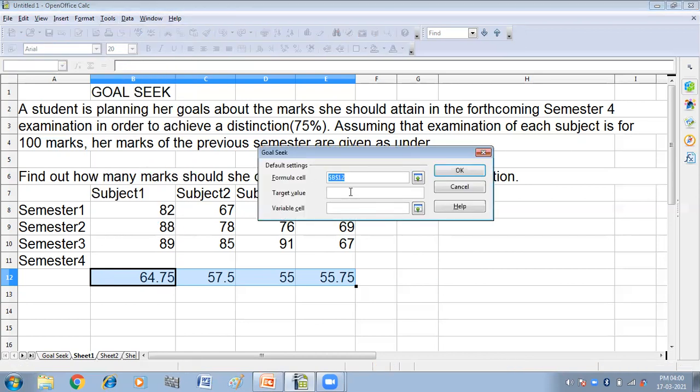I have already selected the formula cell and what is my target value? I have to give the target value. My target value is 75%.